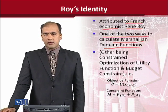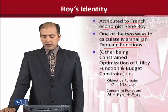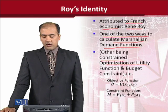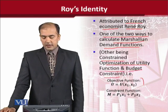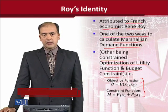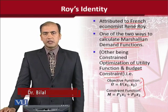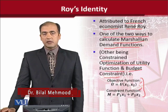We already know that the first method is by constrained optimization of the utility function subject to a budget constraint. So if we have these two functions, we can calculate the Marshallian demand functions. But what is the other way? That is Roy's identity and its usage.